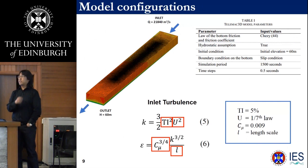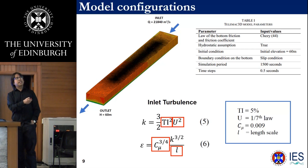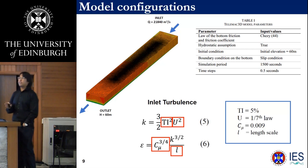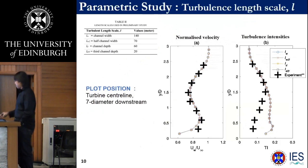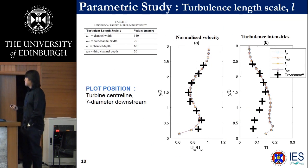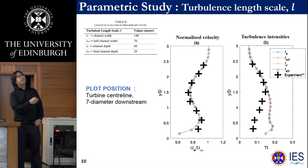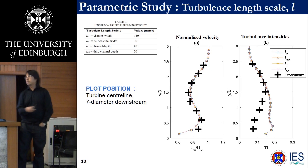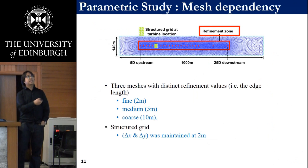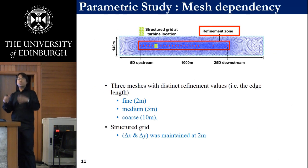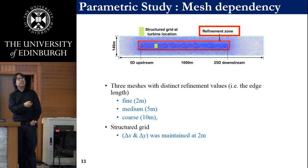This table summarizes the model inputs. The study was run using hydrostatic assumptions, and the turbulence at the inlet was imposed using the K-epsilon model with a turbulence intensity Ti of about 5%, approximated from the experimental setup. A parameter study on turbulent length scale showed that four tested values gave identical results. For mesh dependency, three refinement values were tested: 2 m, 5 m, and 10 m. As expected, a coarser grid gave poor correlation compared to the fine 2-meter grid.